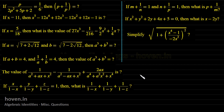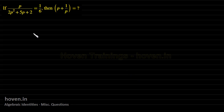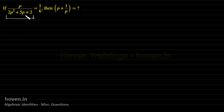We start with our first question. If p divided by (2p² + 5p + 2) is equal to 1/6, then what is p + 1/p? Here it is all about observation. We observe that this is p², this is p, and this is nothing. So if we divide by p, we have a possibility of matching this expression.